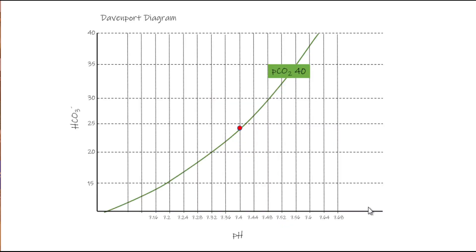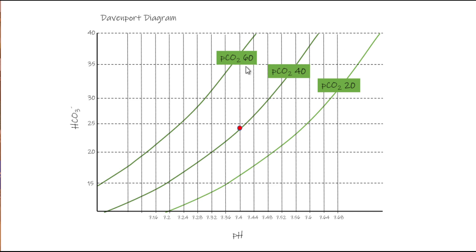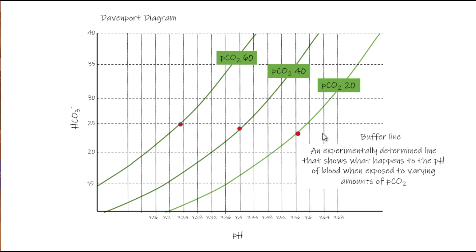A handy way to graphically depict what's happening with these acid-base imbalances is by using the Davenport diagram. The x-axis is pH, the y-axis is bicarbonate, and the green lines are isobars representing the concentration of CO2. We can draw these in for each level of CO2 — here shown in steps of 20. If we take our normal plasma and vary the amounts of CO2 and measure the pH, this gives us what we call a buffer line. This is experimentally derived and shows the changes in pH when we expose blood to varying partial pressures of CO2. This line sets the slope by which we move as we depict compensation in acid-base imbalances.